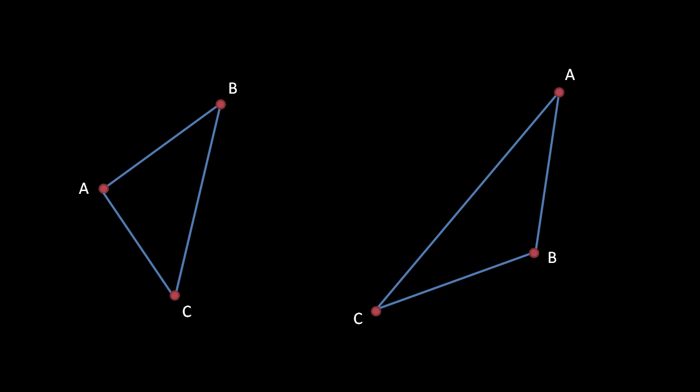Once we can use interpolation to find corresponding points on lines, we can also find corresponding points along the edges of two triangles. Here, the letters denote the corresponding vertices of the two triangles, and so the point which lies 50% of the way from A to B on the left triangle corresponds to the point which lies 50% of the way from A to B on the right triangle.